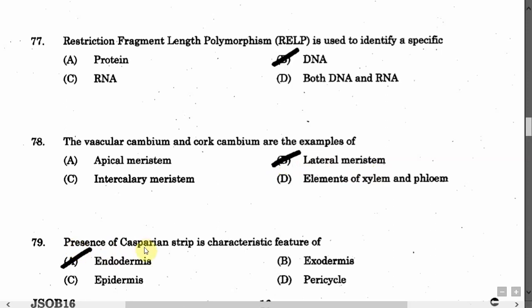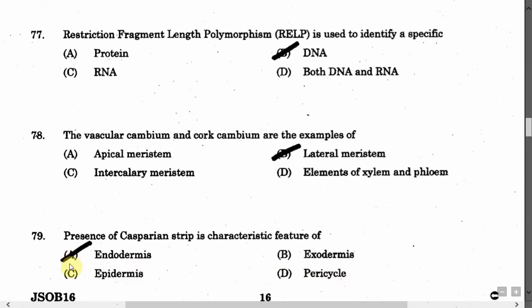The next question is: Presence of Casparian strip is a characteristic feature of — Option A: Endodermis. Option B: Exodermis. Option C: Epidermis. Option D: Pericycle. The correct answer is Option A, that is Endodermis.